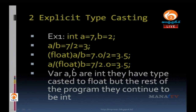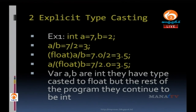When we type cast float(B), 2 is type casted into float, so we get 3.5. Variables A and B are of type integer; they are type casted into float data type for this operation, but for the rest of the program they continue as integers only.